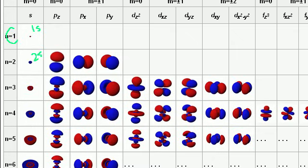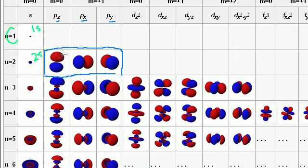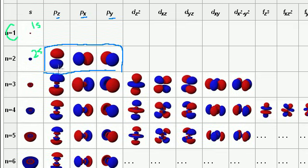Next you fill up the 2p orbital. The p orbitals have three sub-orbitals: pz, px, and py — because there are three ways to configure the dumbbell shapes. One in the z direction (up and down), one in the x direction (left to right), and one in the y direction (forward and backward). You fill one electron into each first, then go back and pair them up — that's called Hund's Rule, which we may cover in a future video.